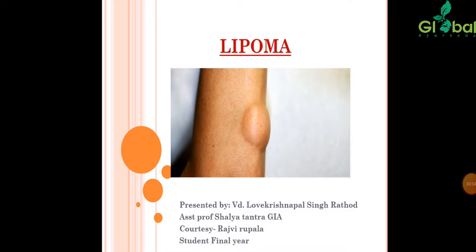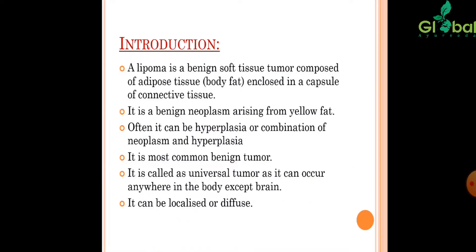Introduction of Lipoma. A Lipoma is a benign soft tissue tumor composed of adipose tissue, enclosed in a capsule of connective tissue. It is a benign neoplasm arising from yellow fat. Often it can be hyperplasia or a combination of neoplasm and hyperplasia. It is the most common benign tumor, also called the universal tumor, as it can occur anywhere in the body except the brain. It can be localized or diffuse.